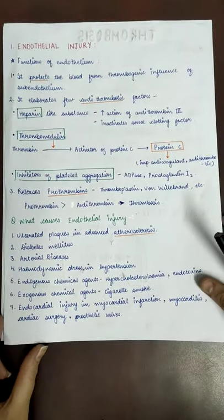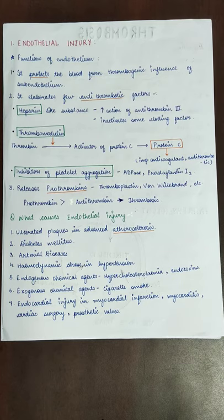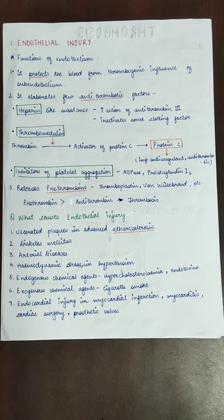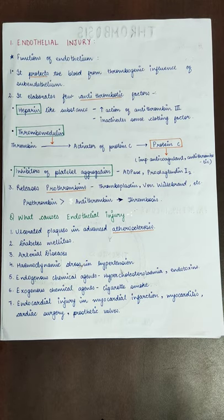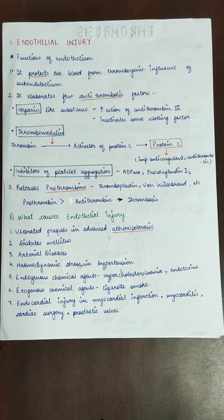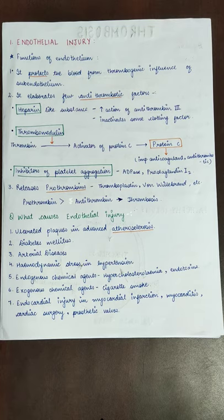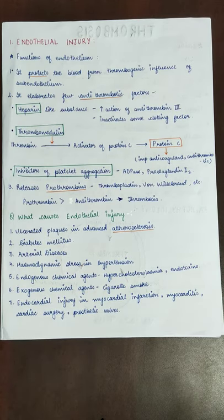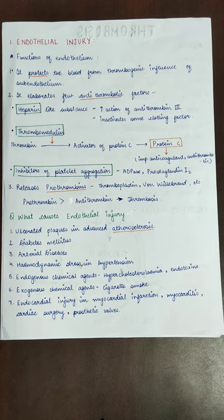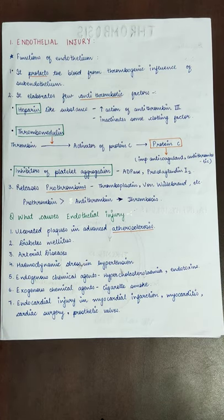First, let's look at endothelial injury. Before learning about it, we need to know the functions of the endothelium. The endothelium is the lining of blood vessels. It does not allow blood to contact the sub-endothelium — the extracellular matrix below it — because if blood contacts that layer, it triggers thrombosis. In normal conditions, forming thrombosis is not good, but if there is a ruptured blood vessel or injury, then triggering thrombosis is necessary. So endothelium protects blood from the thrombogenic influence of the sub-endothelial layer.